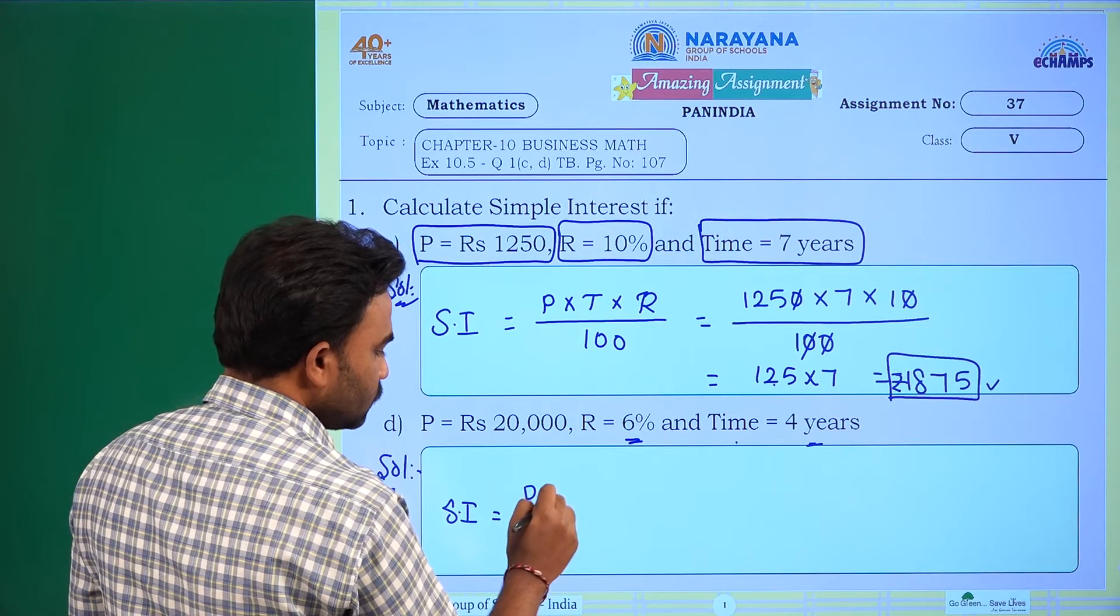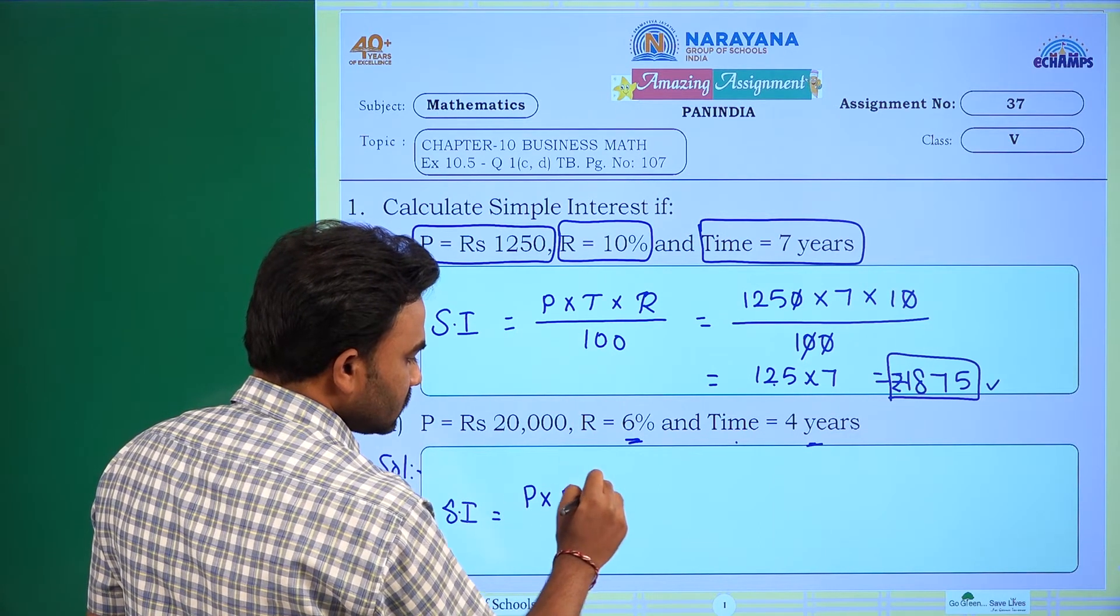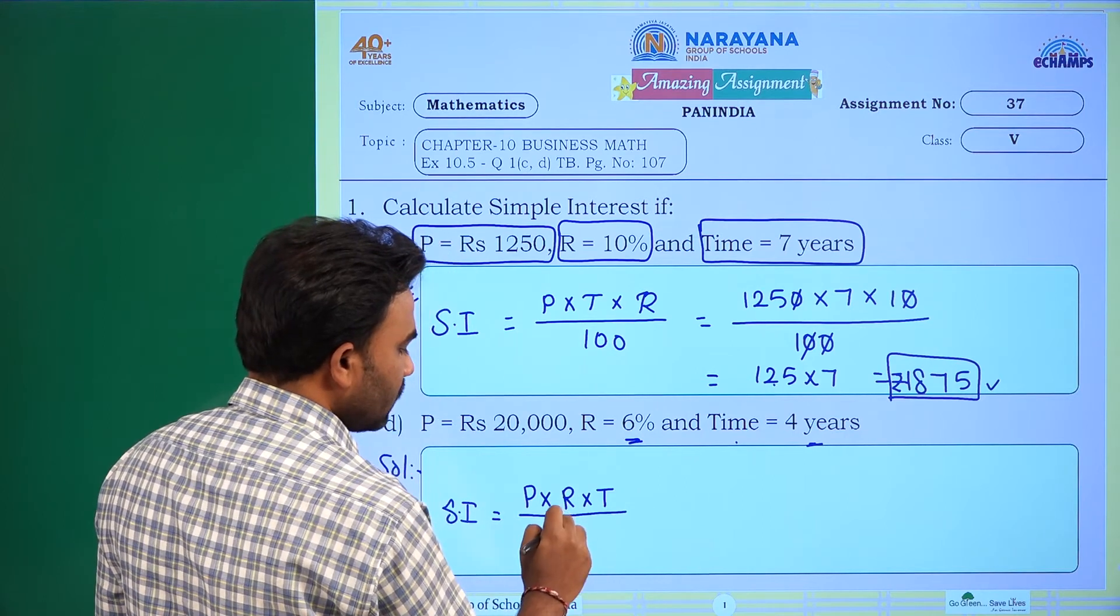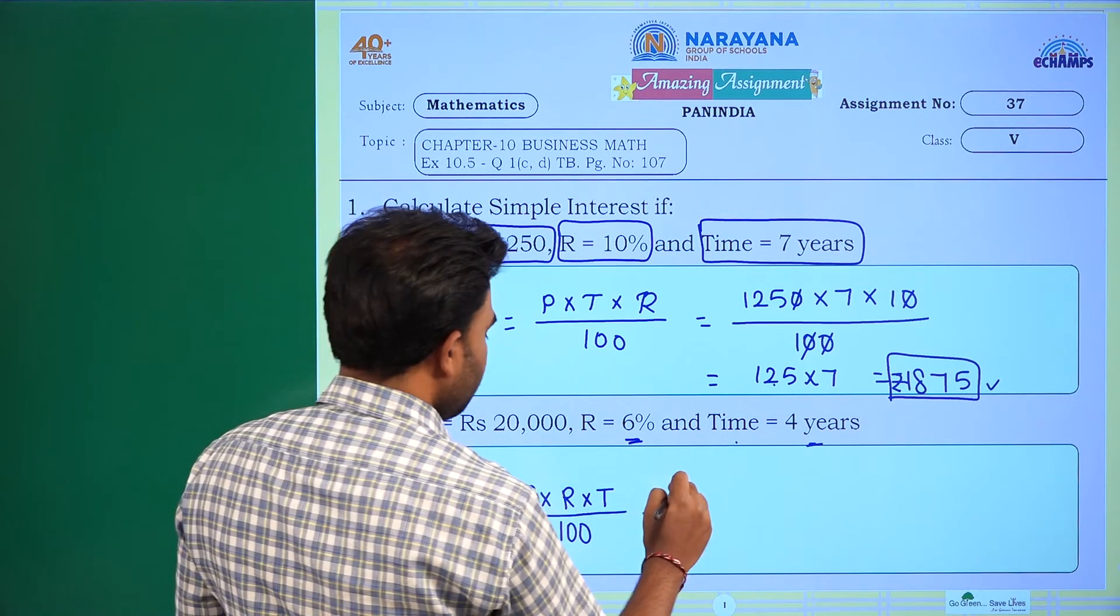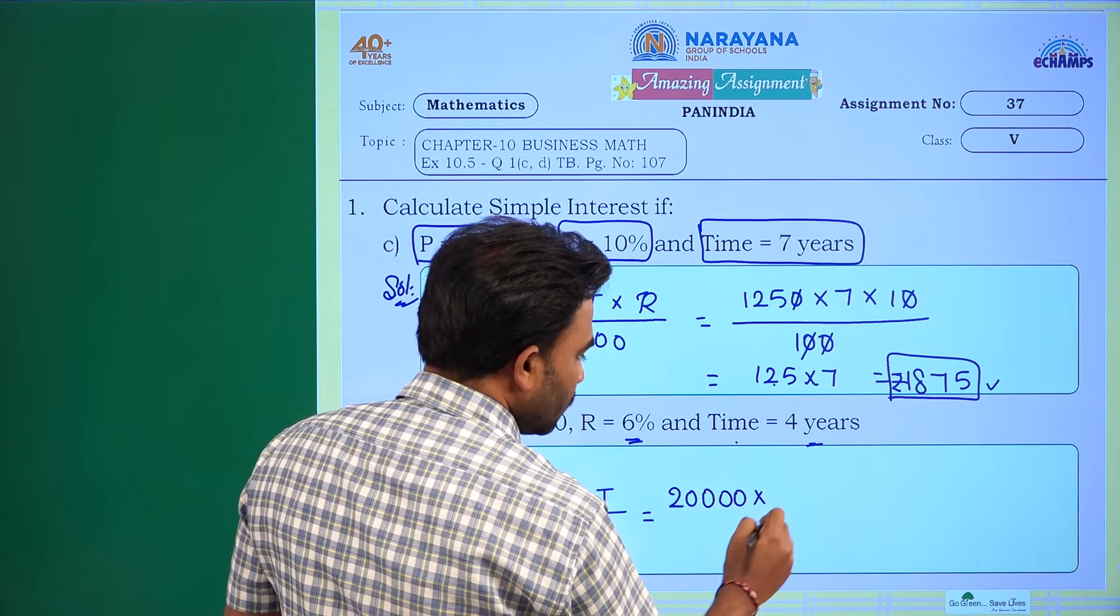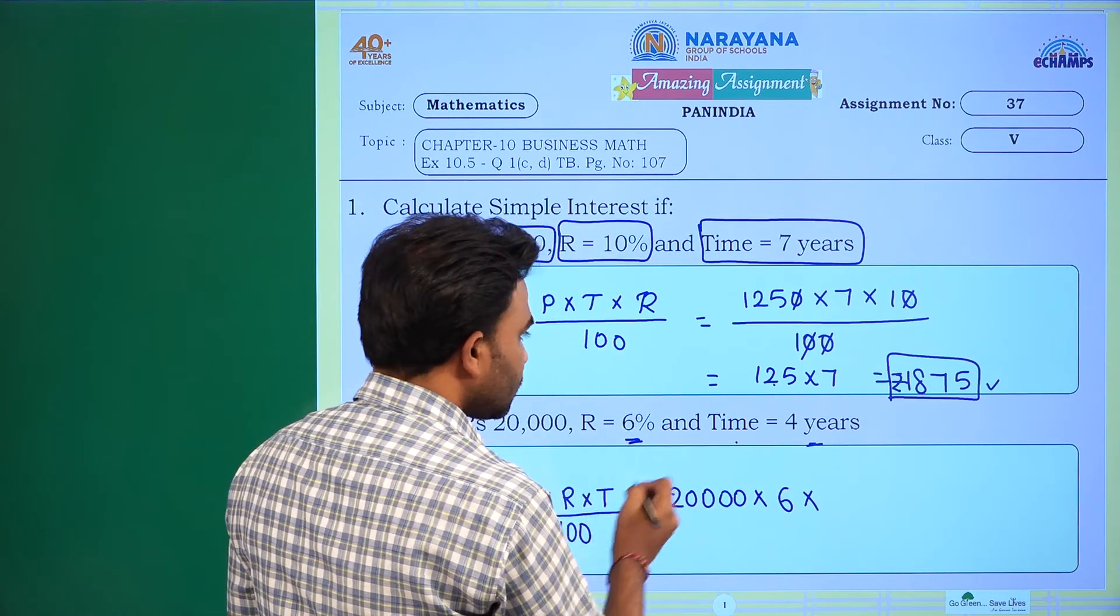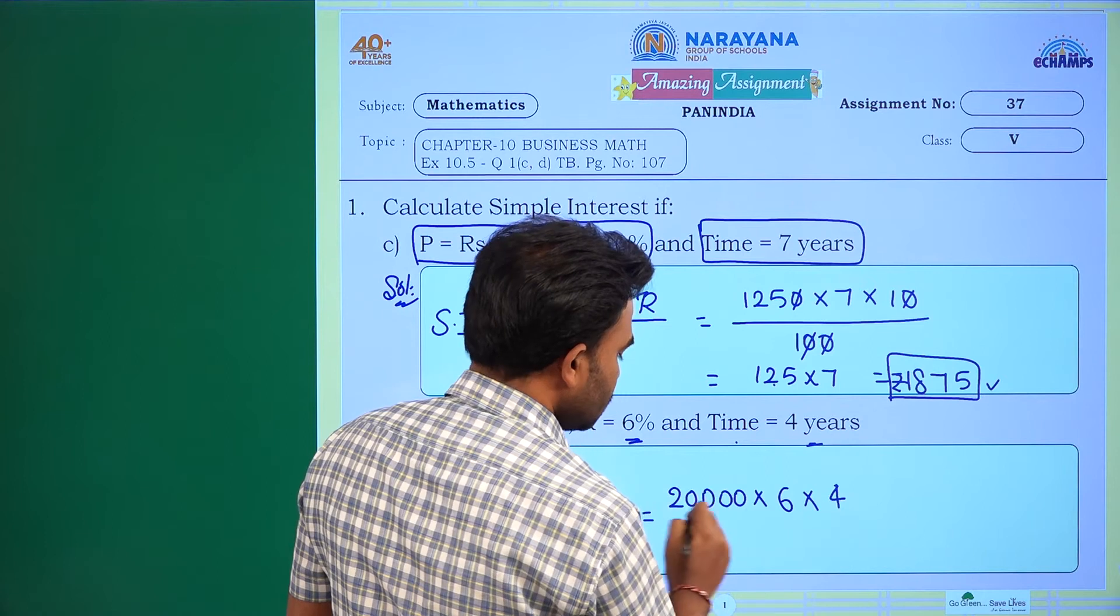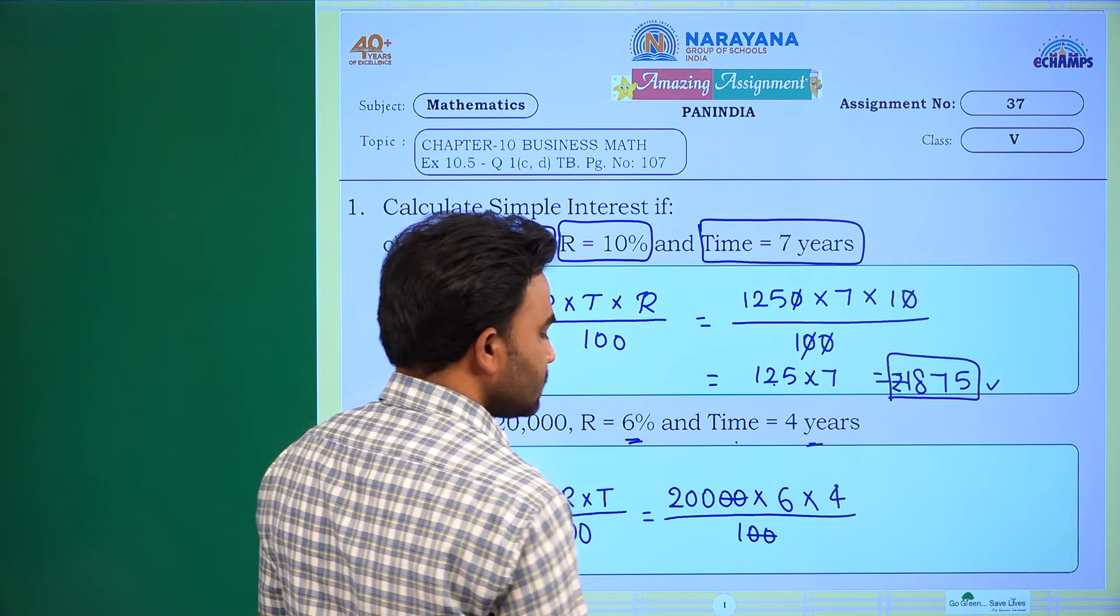It is equal to what is the principle here: 20,000 into rate of interest is 6 into time is 4 years by 100. Two zeros, two zeros cancel.